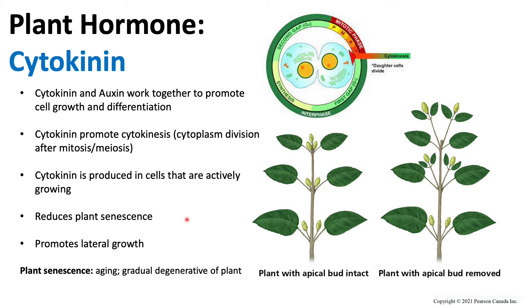Cytokinin is found in the shoots and also in the roots, because a plant is not only growing upward in the shoots but also growing below the ground in the roots.